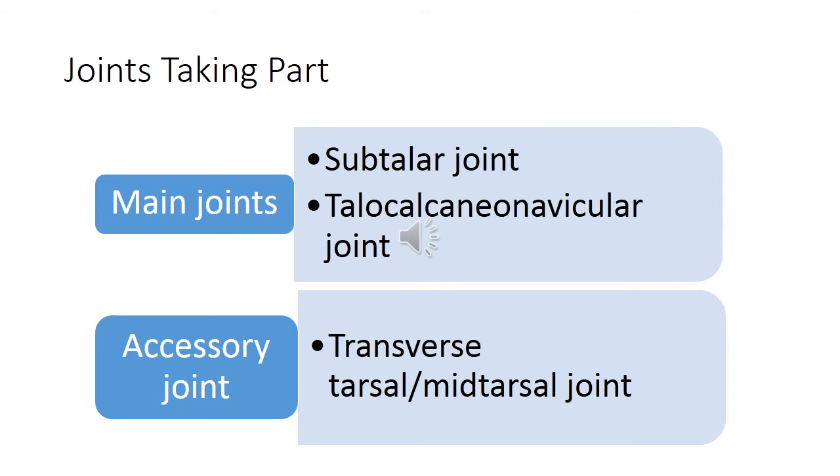Now we will see the joints taking part in eversion and inversion. They are divided into two groups: main joints and accessory joints.